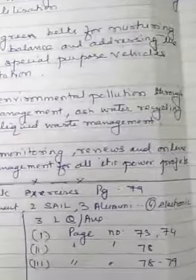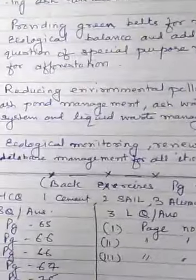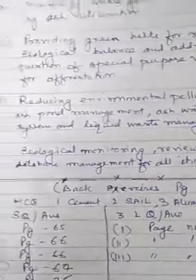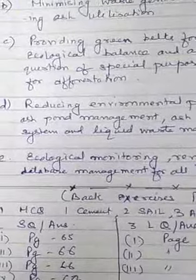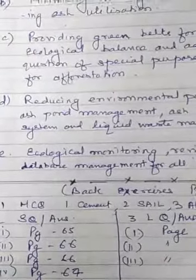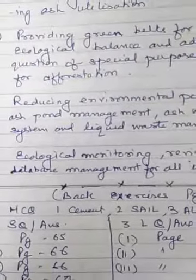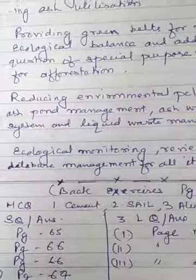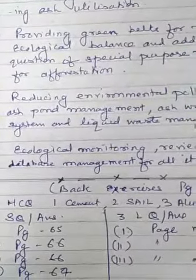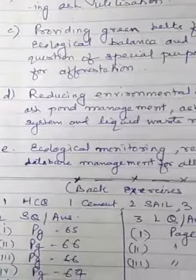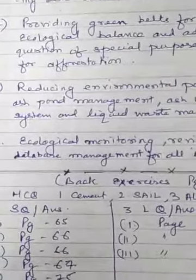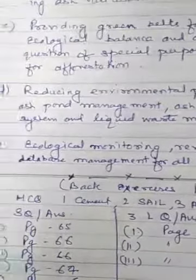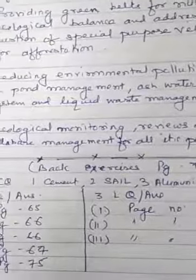Next: ecological monitoring reviews and online database management for all power projects. This means keeping a database of incoming coal, release of carbon dioxide, release of energy, release of oxygen by trees, and how much pollution level has been controlled. Every minute detail is kept in their database — this is called the database management system.